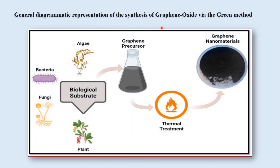This is the general diagrammatic representation of the synthesis of graphene oxide using the green method — an eco-friendly, safer and more protective method — using bacteria, fungi, plant, algae and other biological substrates to get a graphene precursor. By treating the graphene precursor using thermal treatment, you get the final material which is the graphene nanomaterial. This is said to be the eco-friendly green method for synthesizing graphene as a nanomaterial.